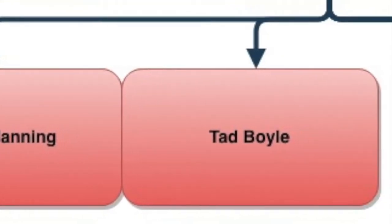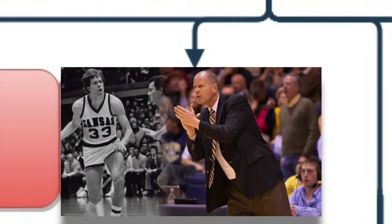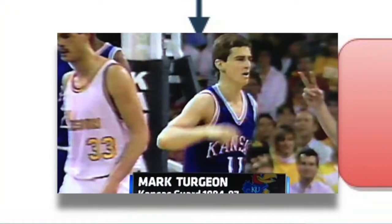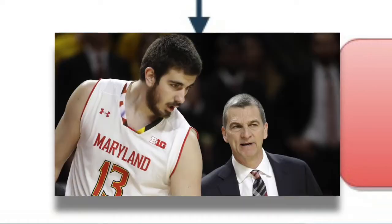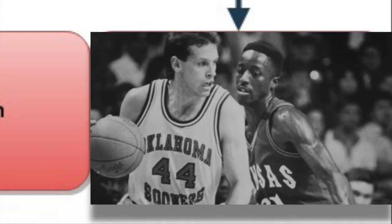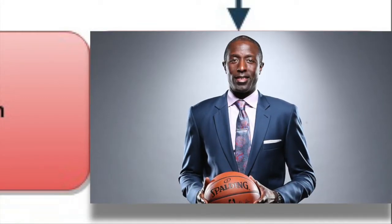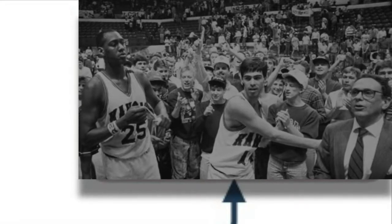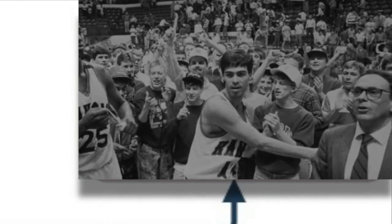Tad Boyle was a former player for Brown and has coached high school and assistant coached in the NCAA, where he is now the coach for Colorado University since 2010. Mark Turgeon played for Kansas, was an assistant for Brown, has gone on to coach many colleges and was once an assistant in the NBA. He is currently at 407 career wins as a head coach in the NCAA and is coaching at the University of Maryland. Milt Newton played for Brown and was part of the 1988 national title team, later moving into the business side as the general manager for the Milwaukee Bucks. Kevin Pritchard was also part of the 88 team, played briefly in the NBA, and after a few stints of coaching went into the business side as well, currently serving as president of operations for the Indiana Pacers.